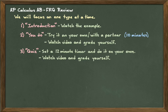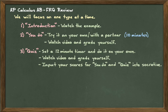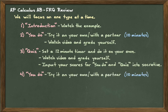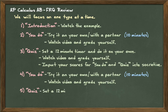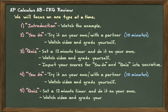Be honest when you're grading yourself. You're going to input your scores for both the 'you do' and the quiz into Socrative when you're done. The fourth thing is just another 'you do' — same as before: try it on your own or with a partner, set a timer for 10 minutes, then watch the video and grade yourself. Please do not do it while watching the video. Question five will be another quiz — set the timer for 12 minutes and do it on your own, then input your scores into Socrative.